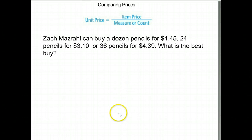We're going to talk about unit prices. Zach Mazrahi can buy a dozen pencils for $1.45, 24 pencils for $3.10, or 36 pencils for $4.39. What is the best buy?